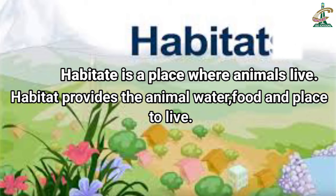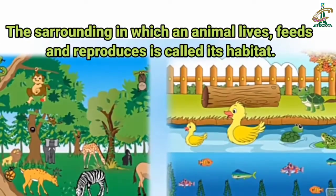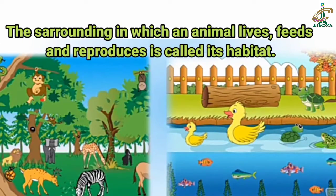Habitat اس جگہ کو کہتے ہیں جہاں پہ animals رہتے ہیں اور جہاں پہ animals رہتے ہیں، وہاں پہ انہیں water، food اور رہنے کی جگہ ملتی ہے۔ The surrounding in which an animal lives, feeds and reproduces is called its habitat. جہاں پہ animal رہتے ہیں، کھانا کھاتے ہیں اور reproduce ہوتے ہیں، وہ ان کی habitat کہلاتی ہے۔